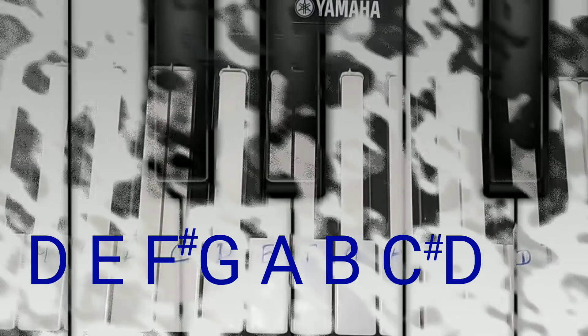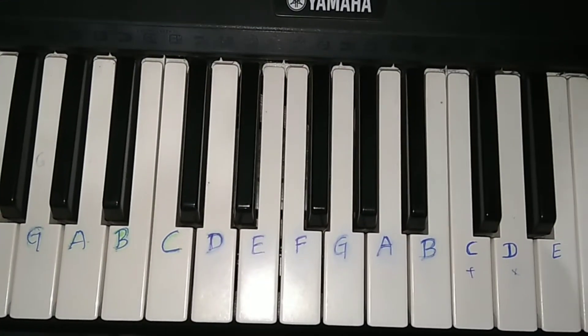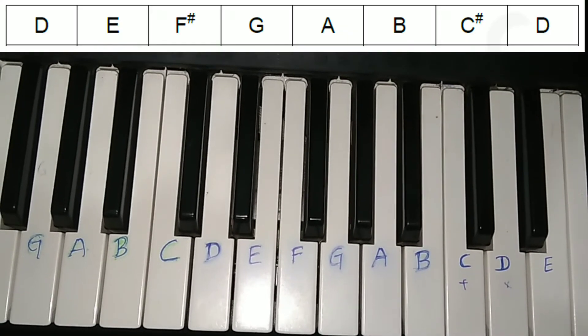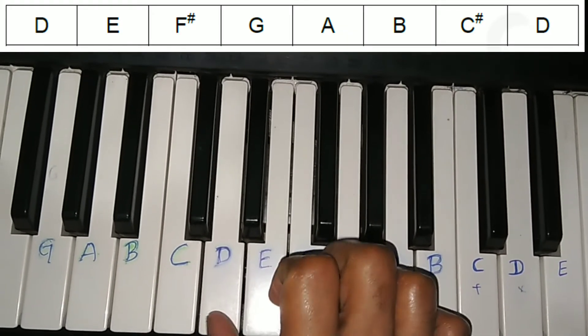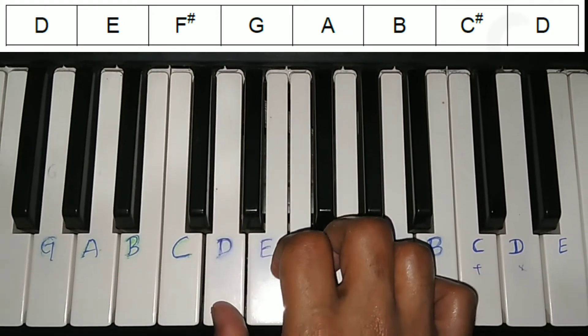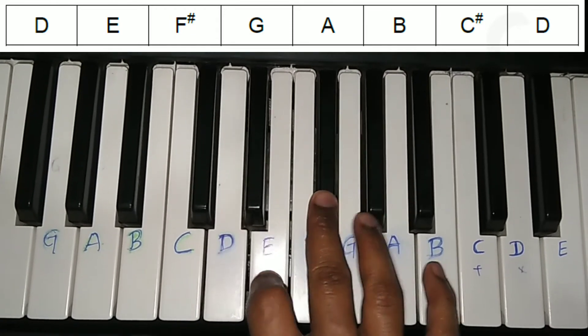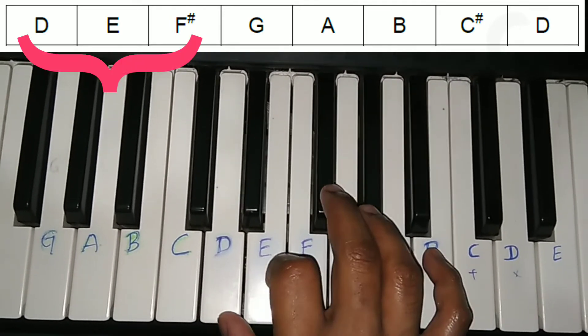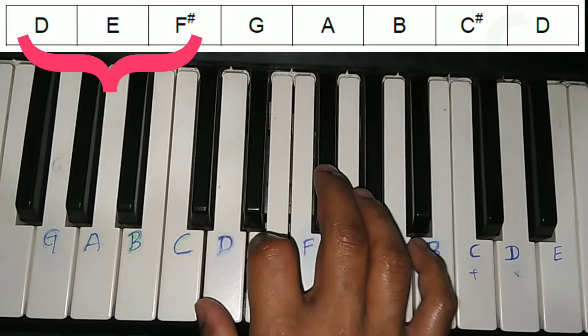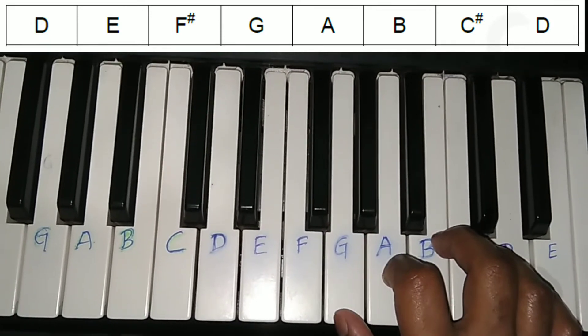Now it's time to practice the D scale. Place your hand with your thumb on D: D, E, F sharp. After playing the first three notes, move your finger from D position to G position, then play the remaining notes: G, A, B, C sharp, D.